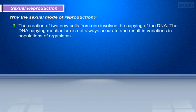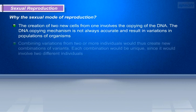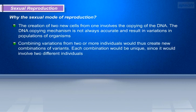Now let us see what is the necessity of the sexual mode of reproduction. The creation of two new cells from one involves the copying of the DNA. The DNA copying mechanism is not always accurate and results in variations in the populations of organisms. Combining variations from two or more individuals would thus create new combinations of variants. Each combination would be unique, since it would involve two different individuals.